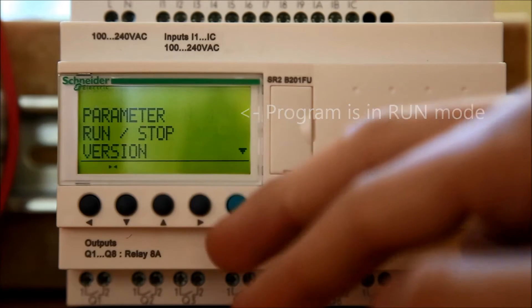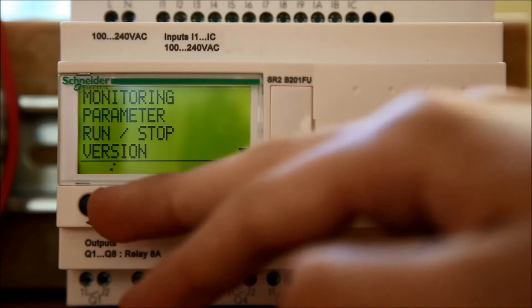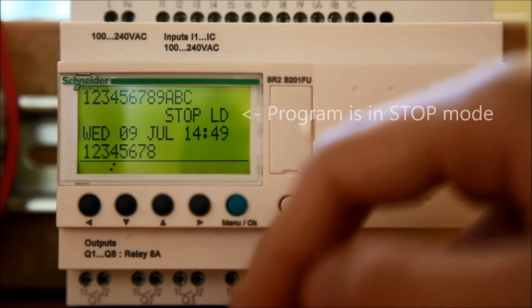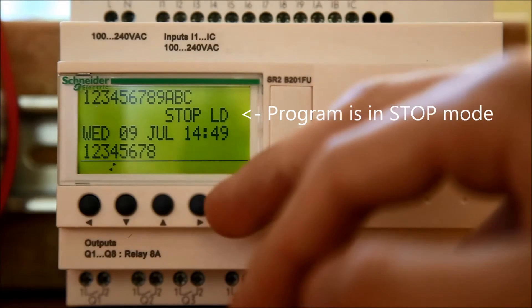Press the Menu OK button and scroll to the Run Stop option using the up and down arrows. Press the Menu OK button and press the Menu OK button again to confirm. Once the program is stopped,